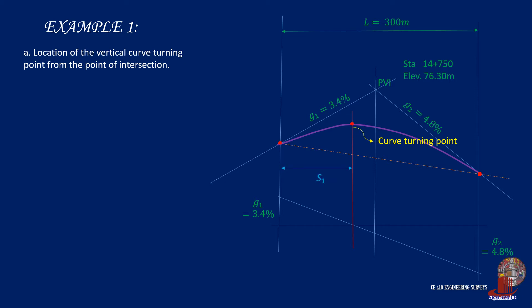By using ratio and proportionality, take distance S1 as g1 times L all upon g1 minus g2. Plugging in the grades and L, it will be computed as 124.39 meters. To answer the requirement, take the distance A from the point of vertical curve, and that is its location as half of L less S1, so A is computed as 25.61 meters.